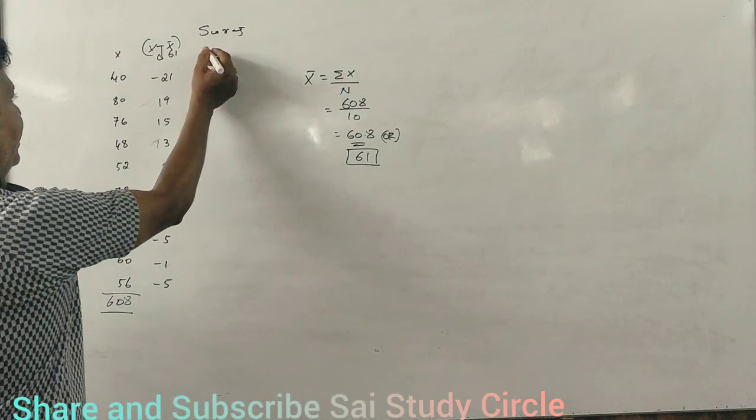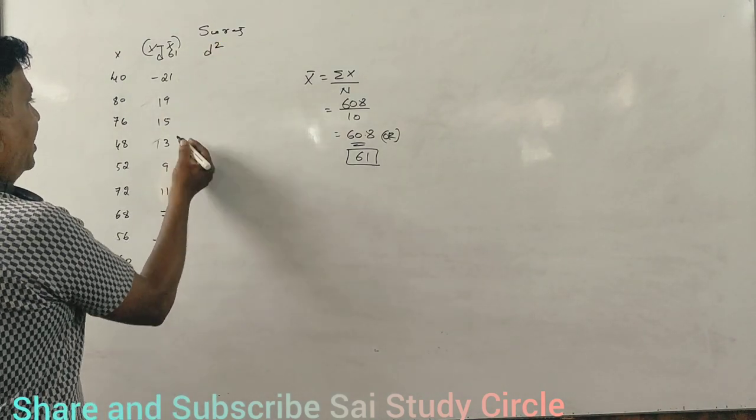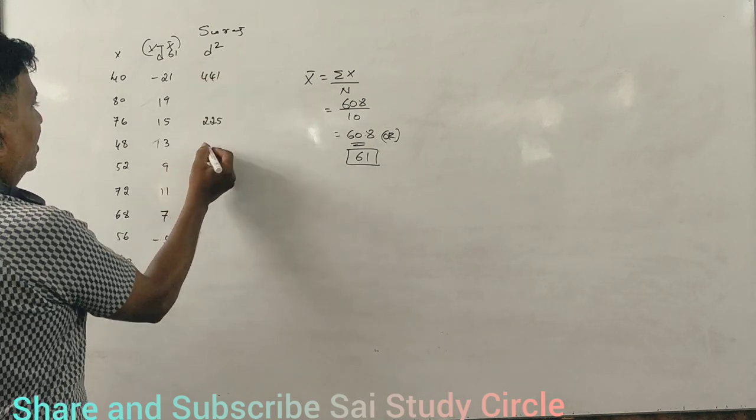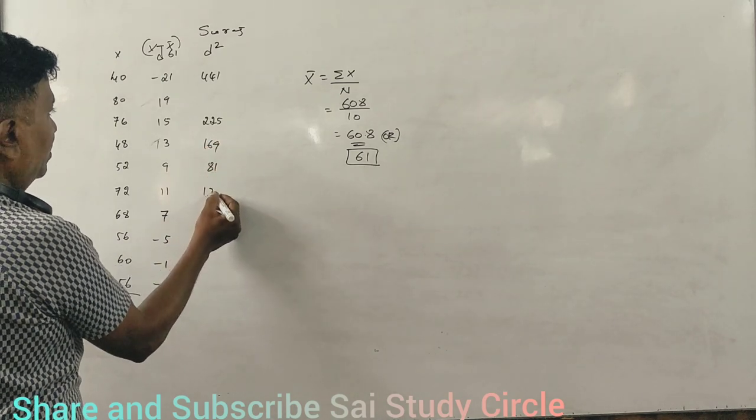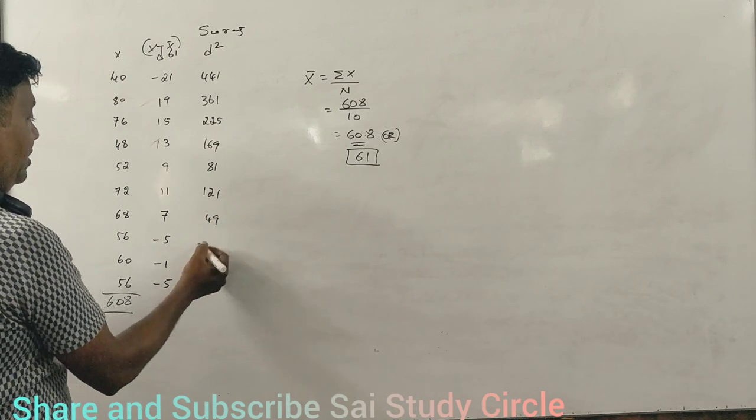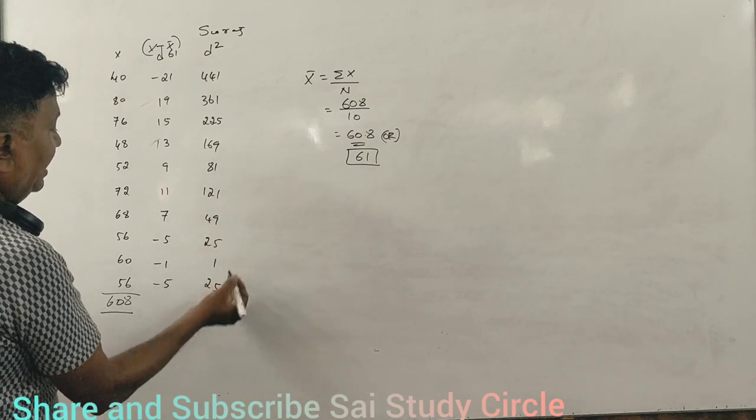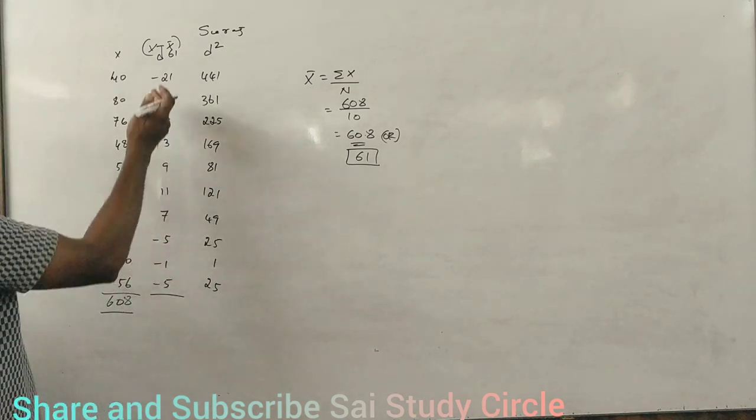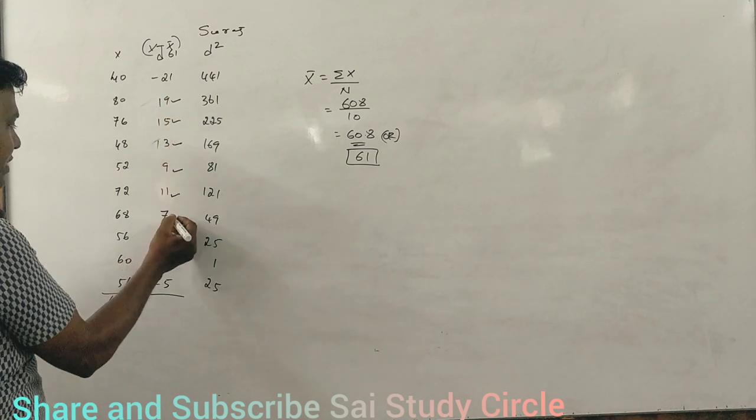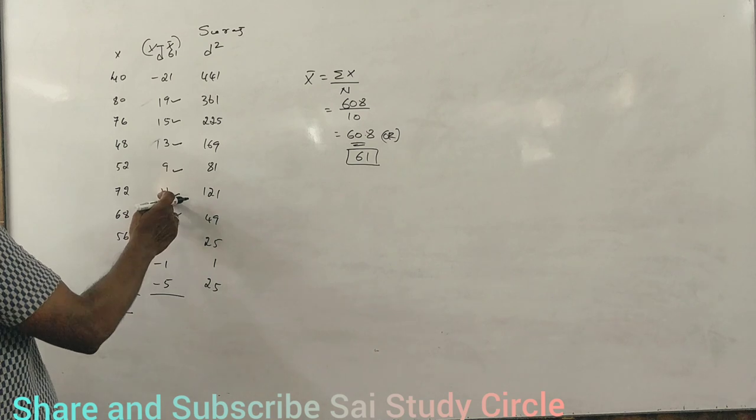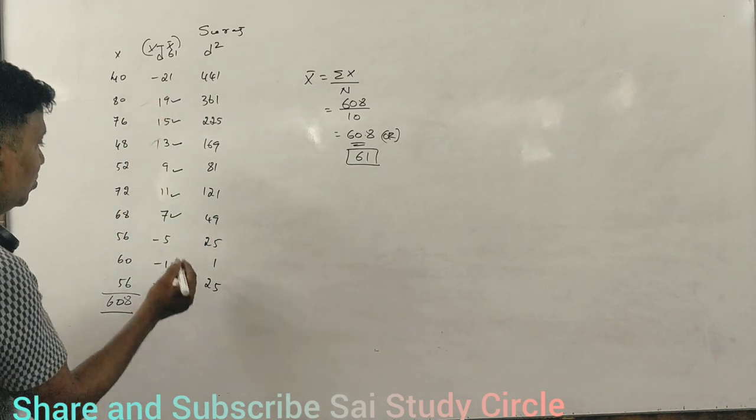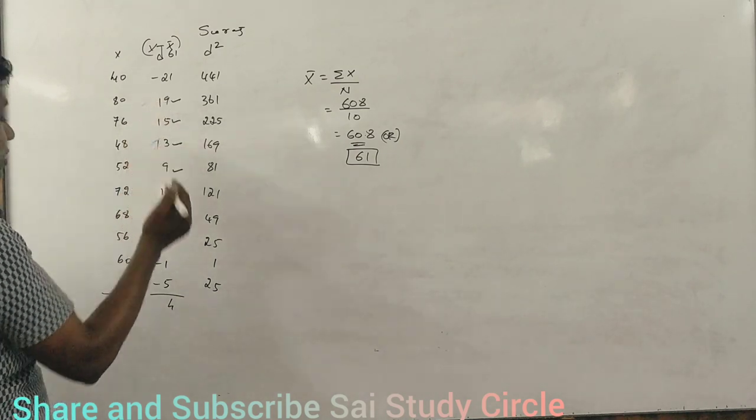D squared is equal to 441, 361, 225, 169, 81, 121, 49, 25, 1 and 25. Correct? Total is 1498.